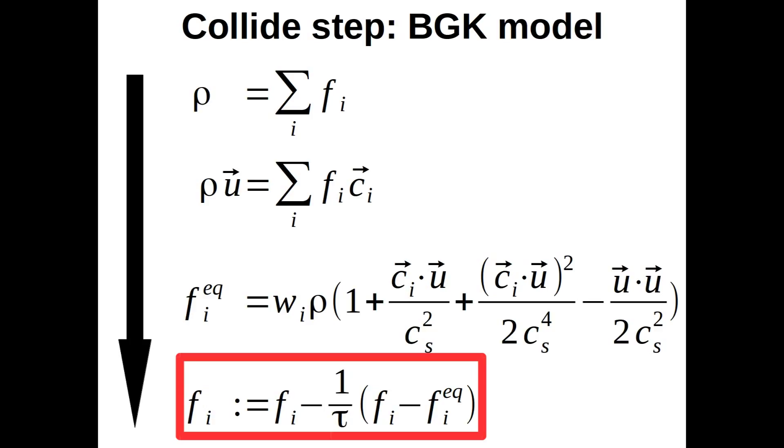Due to numerical stability, tau needs to be in the range 0.5 to 2.0.